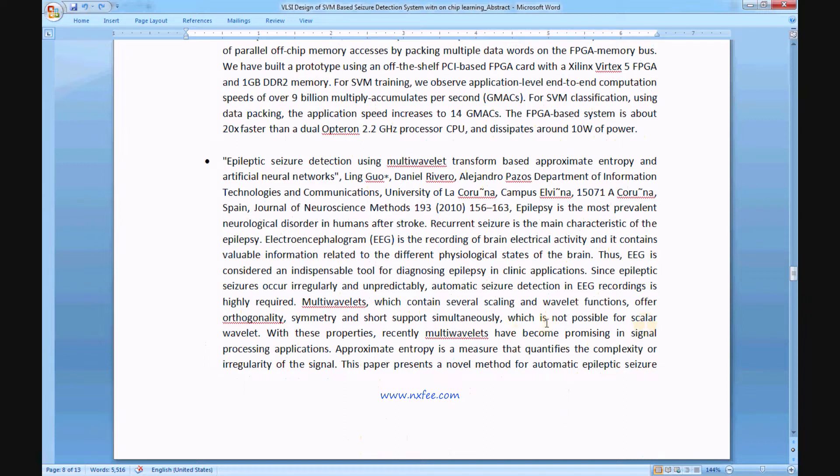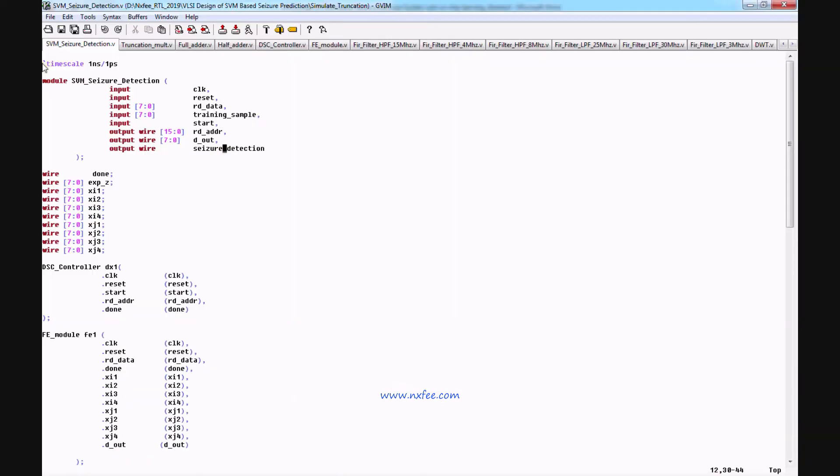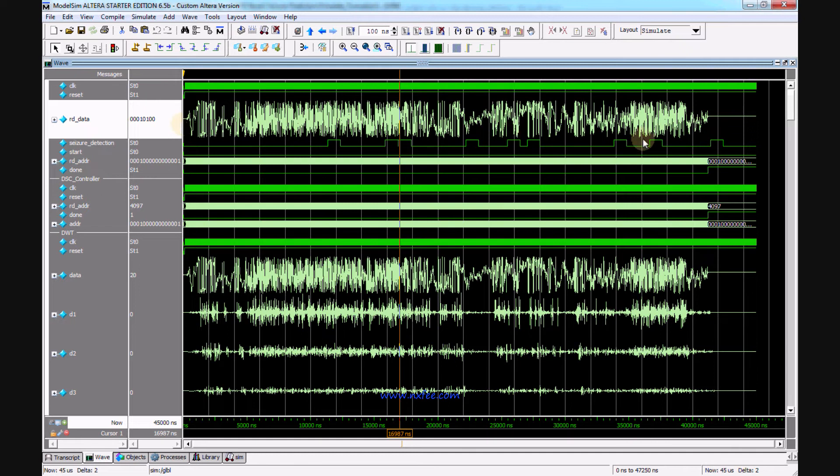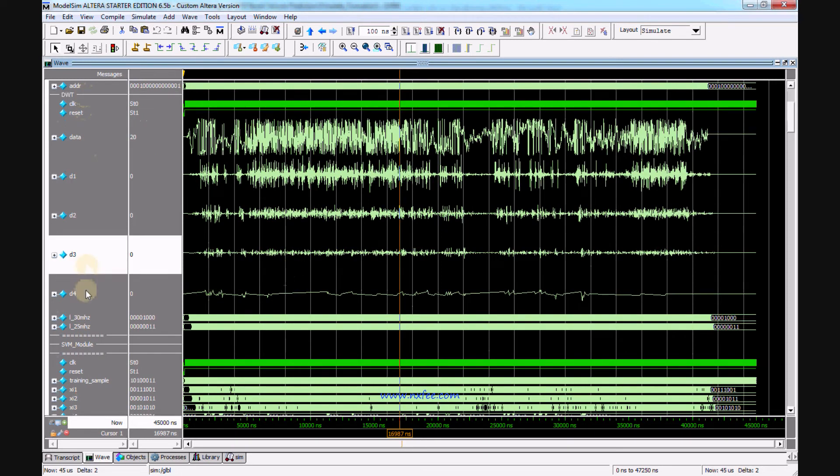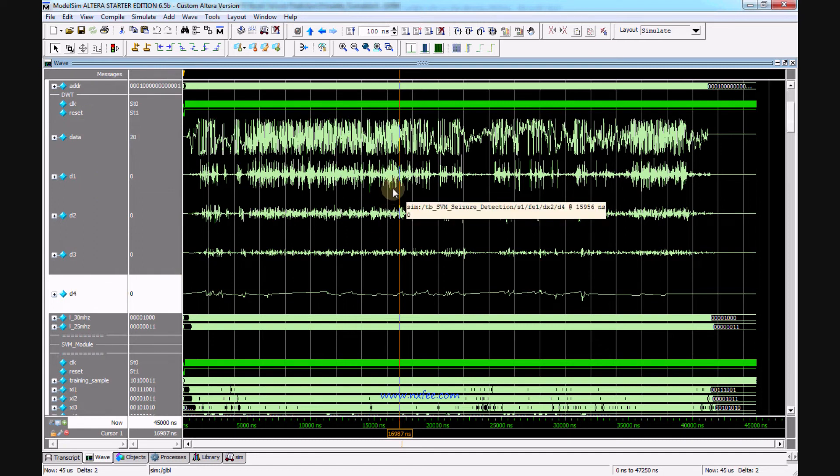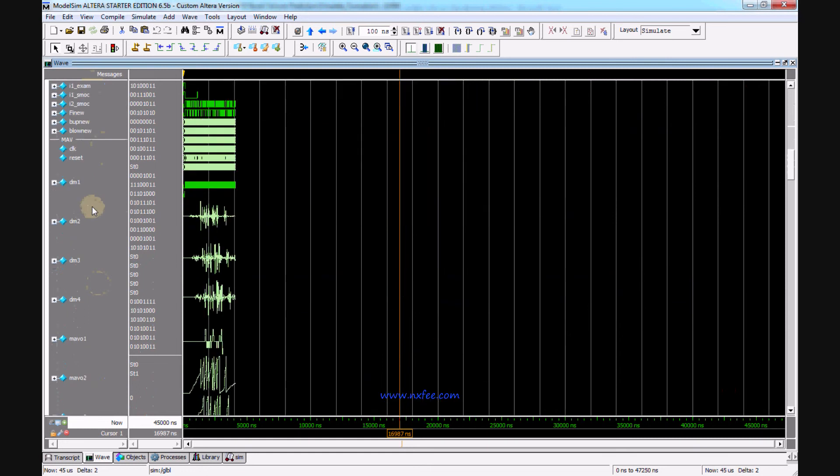Here are all the codings for the SVM detection system. We have inputs: clock and reset. The seizure signal detects the output when the seizure is detected. Wherever the seizure is detected, it goes high; otherwise, it goes low. This is the DSC controller, and this is the output of DWT. DWT has four types of filters that filter the output with ranges like 15, 8, 4, 30. Based on these, the output power level is reduced. This is the SVM submodel, and this is the MAV model.